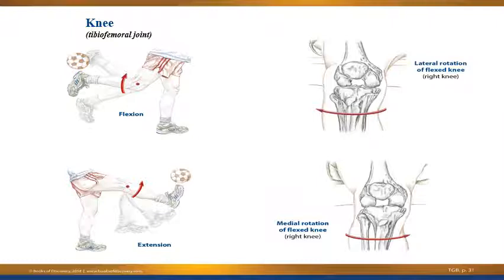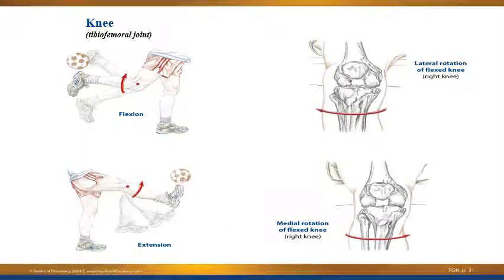At the knee, the primary motions are flexion and extension. The knee is considered a hinge joint, but a modified hinge joint because there is some rotation that can take place — however, the knee can only rotate when it's flexed. When the knee is fully extended, there is no rotation. So the lower leg can rotate, essentially rotation at the knee, but only when the joint is flexed. When the joint is completely extended, the knee locks, and the only way to turn the lower leg in and out at that point is by rotating at the hip.